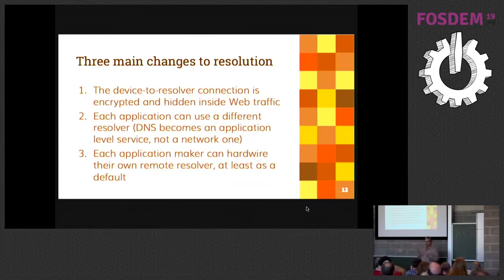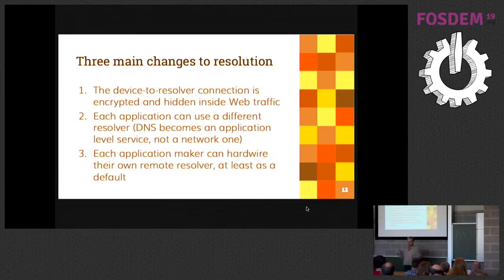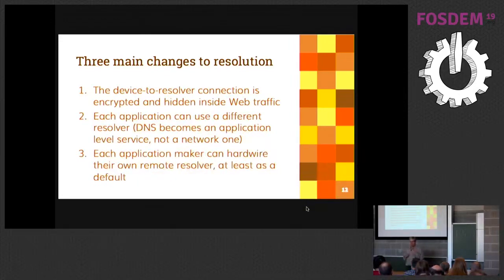For example, if the server is put on the same IP address as www.youtube.com, you cannot block the IP address without also blocking YouTube — and no one wants to block YouTube. So it's basically impossible to block DoH for ISPs or anyone sitting in the middle. The second change is that each application can use a different resolver, since it's no longer using the operating system. This moves DNS from the network layer to the application layer, becoming an over-the-top application.